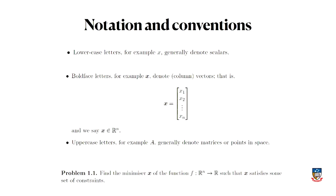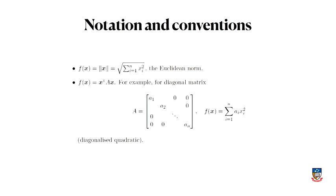Those are all the sorts of things we'll look at in this course. Here's a quick bit of notation and conventions: lowercase letters like x will be a scalar, bold x will be a vector, and uppercase will be a matrix. The general problem we'll solve throughout the course is: find the minimizer x — usually a vector — of some function f, mapping from some high-dimensional space to a number, such that x satisfies some set of constraints. A common cost function we'll use is Euclidean distance, using norms a lot.